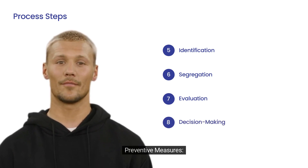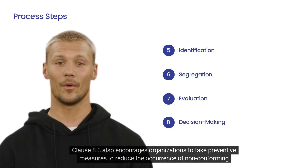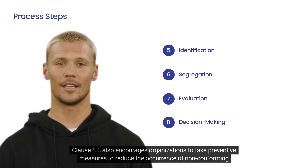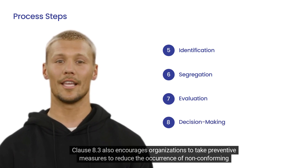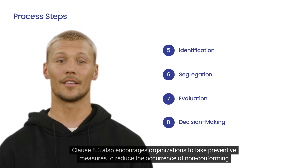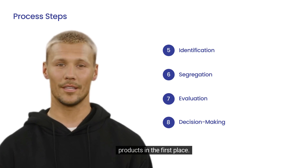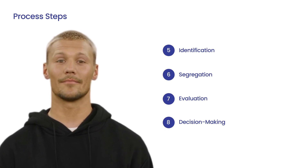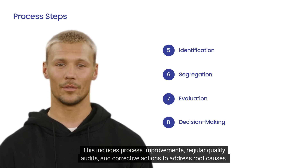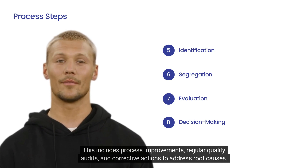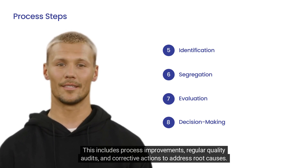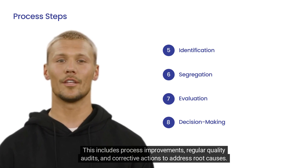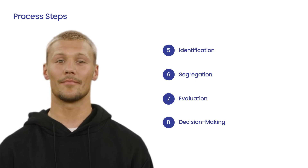8. Preventive measures. Clause 8.3 also encourages organizations to take preventive measures to reduce the occurrence of non-conforming products in the first place. This includes process improvements, regular quality audits, and corrective actions to address root causes.